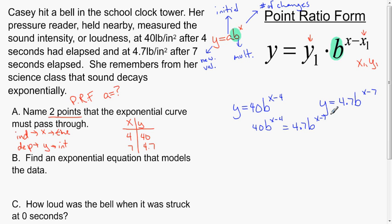Now I'm going to solve for b. You might be saying how are you going to solve for b when you've got this x in the problem too? Just be patient. Let's start by trying to get our b's on one side. I'm going to divide both sides by b to the x minus 4, which cancels it on the left. The result is 40 equals 4.7b to the x minus 7 over b to the x minus 4.